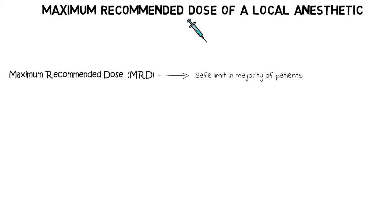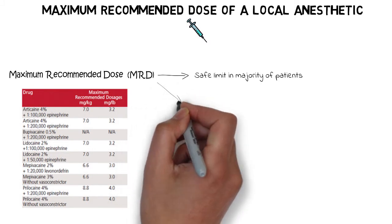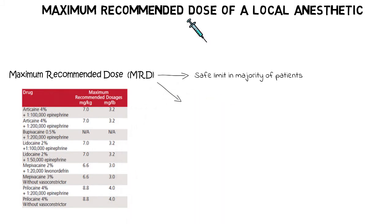Almost every local anesthetic has a specific maximum recommended dose which is recommended by the FDA. This MRD is expressed in milligrams per kilogram of body weight or milligrams per pound of body weight, depending upon the region that you are living in.